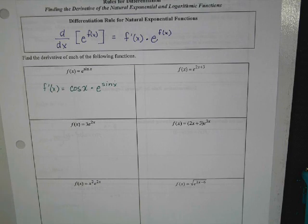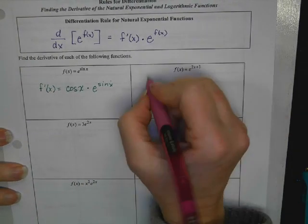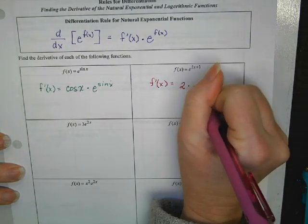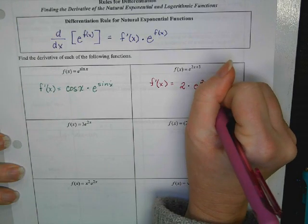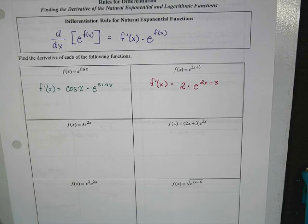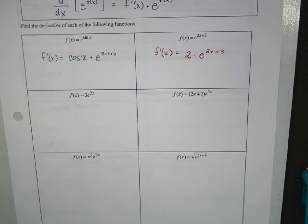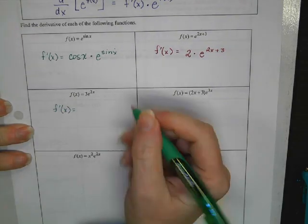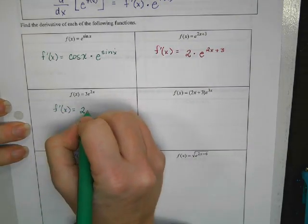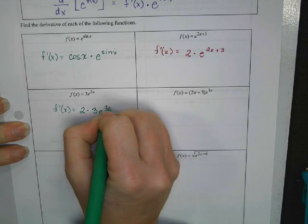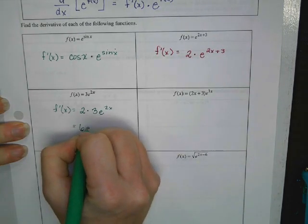So, the next one's just... I'm going to take the derivative of the inside piece. So, what's the derivative of the inside piece? 2. So, it's going to be 2 times e to the 2x plus 3. This is nice. Not bad, right? The derivative of the inside piece. 2 times the derivative of the whole piece. That one, I will simplify and make it 6e to the 2x.